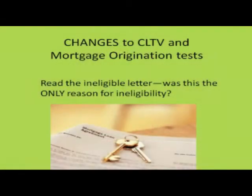Let's talk about the change to the combined loan to value test and the mortgage origination test. There's not too many details to share except to remind you that before you can deem a formerly ineligible applicant as eligible, make sure their ineligible letter lists only one or both of those as the only reasons why they're ineligible. You don't want to see that they also have an active bankruptcy, because nothing's changed about active bankruptcies — if a person has a bankruptcy right now, they're still ineligible.